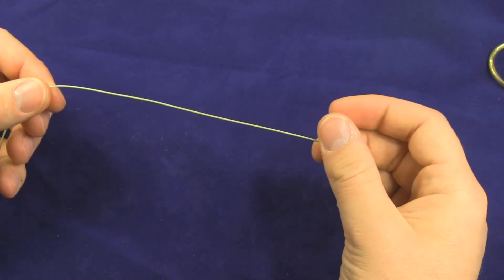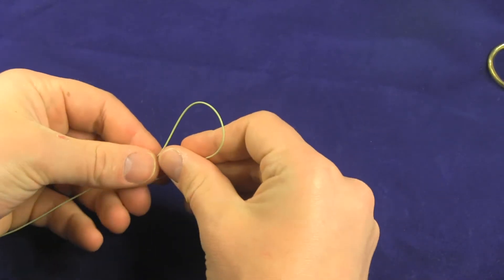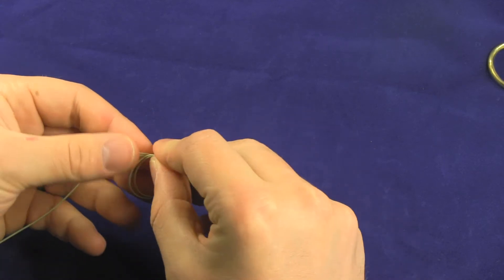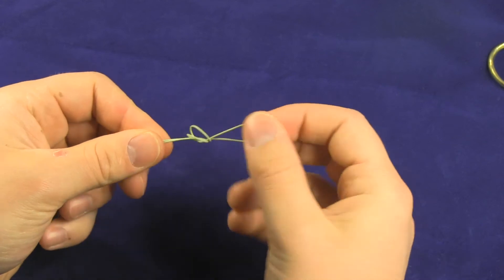So if you have a tag end of a line here that you want to put a loop into, double it back over, take that double of the piece, make a loop and pass that right through.